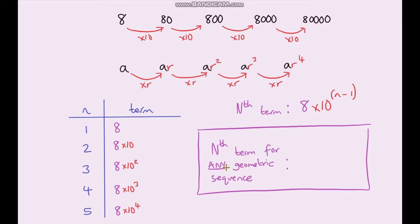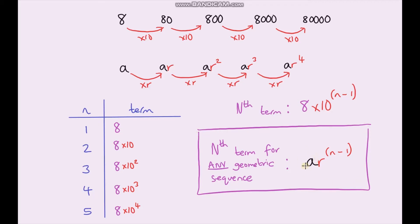So the nth term for any geometric sequence is: we take our first term a and multiply it by our common ratio r. How many times do we multiply by r? The second term does it once, the third term does it twice — it's always one less than the term number, so it's always n minus 1. Therefore, the nth term of any geometric sequence is a times r to the power n minus 1.